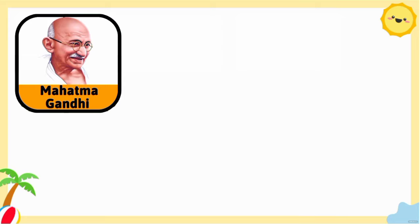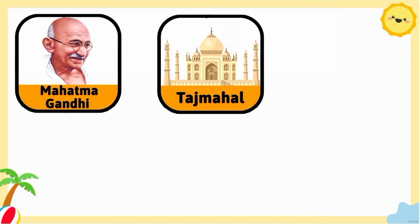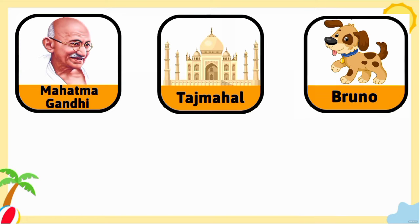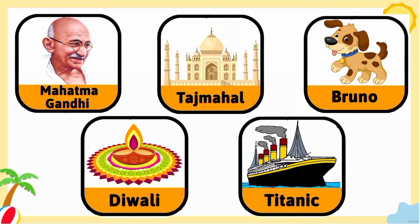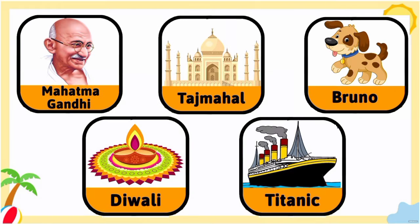Mahatma Gandhi — Mahatma Gandhi is the name of a person. Taj Mahal — Taj Mahal is the name of a place in Agra. Bruno — Bruno is the name of a dog. Diwali — Diwali is the name of a festival celebrated in India. And Titanic — Titanic is the name of a ship.